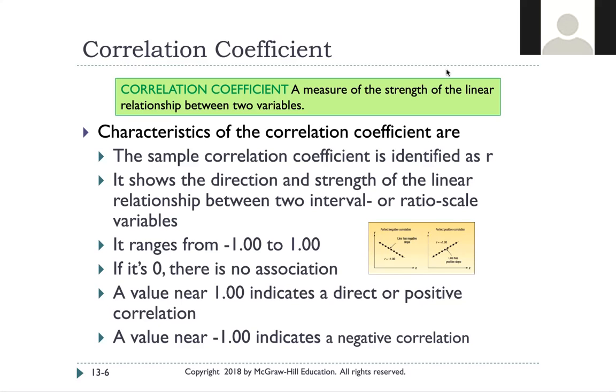It can range from negative one to one. So if it's zero, that means there's no association. If it's a positive one, that means that it's a strong positive relationship. And then same holds true for negative one, it would be a strong negative relationship.